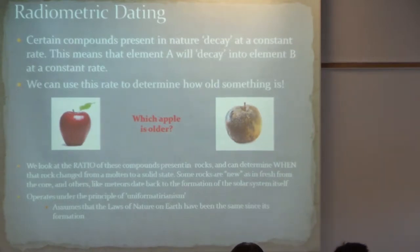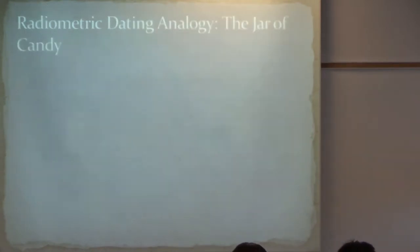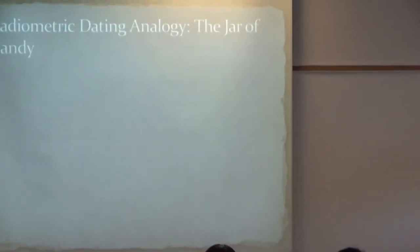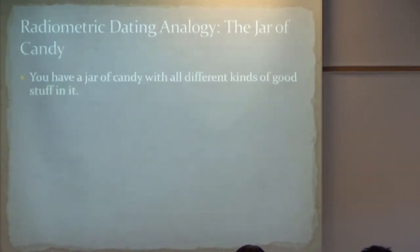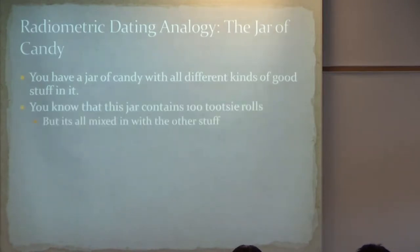We haven't seen any evidence, or we have no data showing that they've ever drastically changed. So we operate under that assumption. So let's go into a little bit more about how, exactly how radiometric dating works. And I like to use the jar of candy analogy. So let's say that you have a jar of candy, all kinds of good stuff in it. Lollipops, bit of honeys, Tootsie Rolls, jelly beans, right?